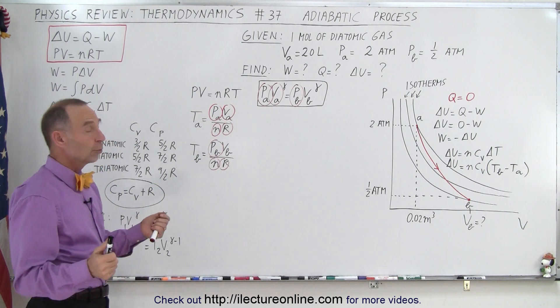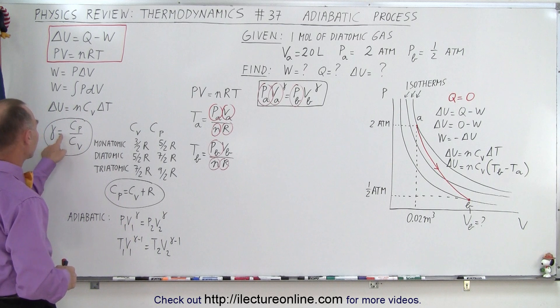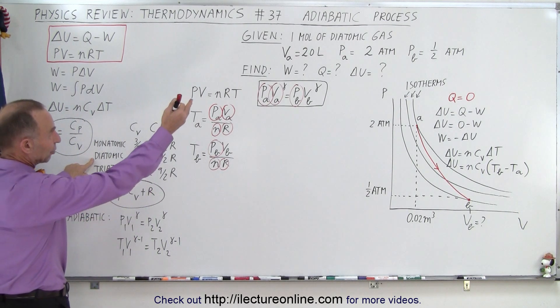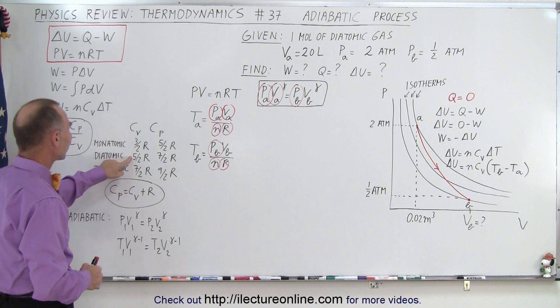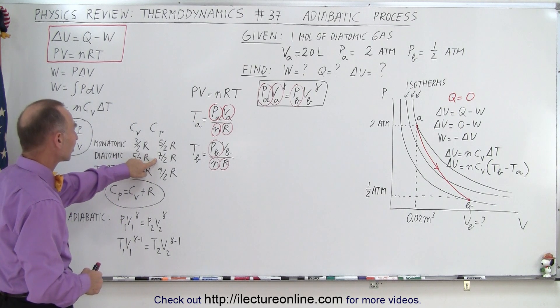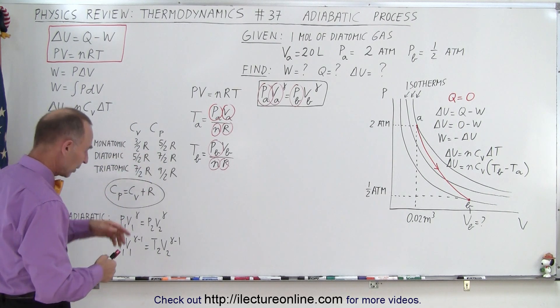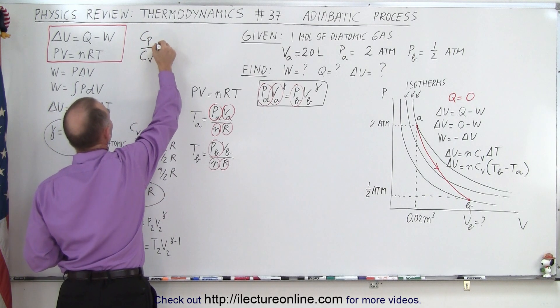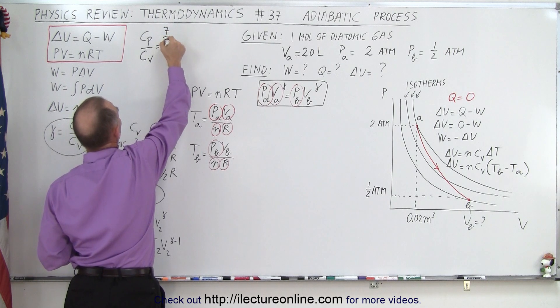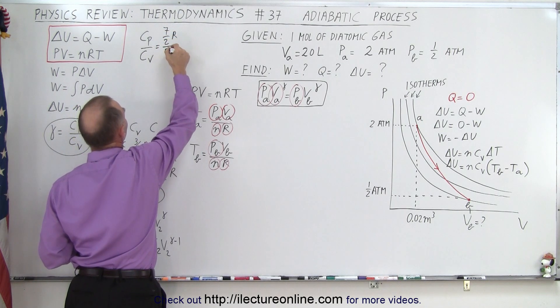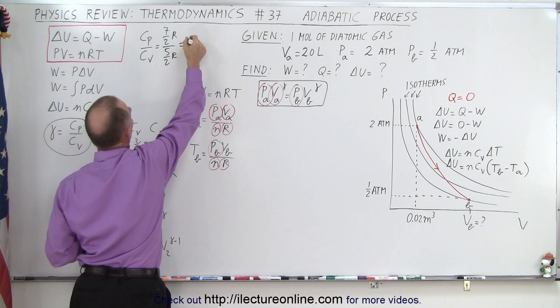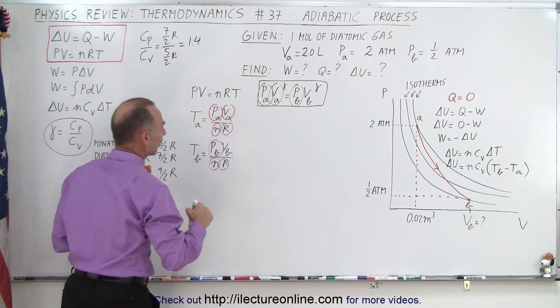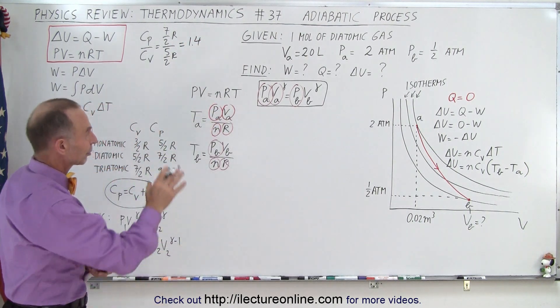The one thing left is what is gamma? And so gamma, remember, is the ratio of C_P over C_V, and for a diatomic gas, which is what we have, C_V is 5 over 2R, C_P is 7 over 2R, so the ratio between those two, C_P divided by C_V is equal to 7 over 2R divided by 5 over 2R, so that's equal to 1.4. So now we have the gamma, and we should be able to solve for that.